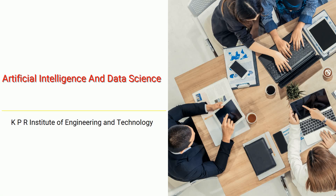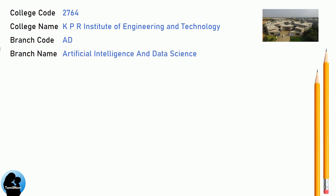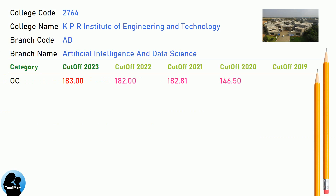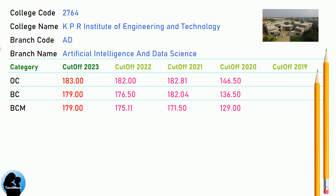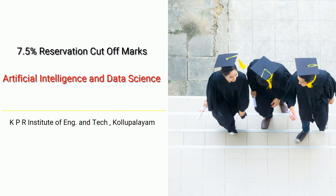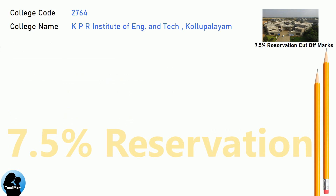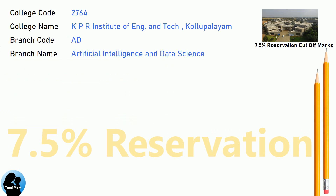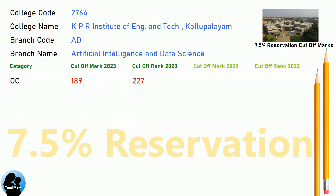DNA Cut-off for KPR Institute of Engineering and Technology in Artificial Intelligence and Data Science. DNA 7.5 Reservation Cut-off for KPR Institute of Engineering and Technology in Artificial Intelligence and Data Science.